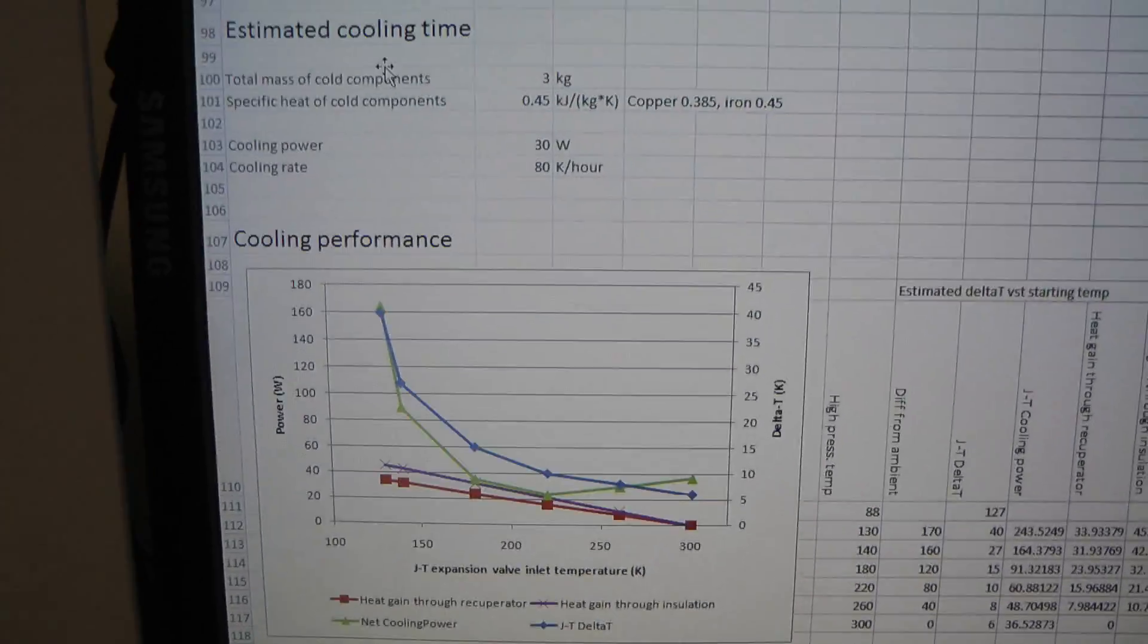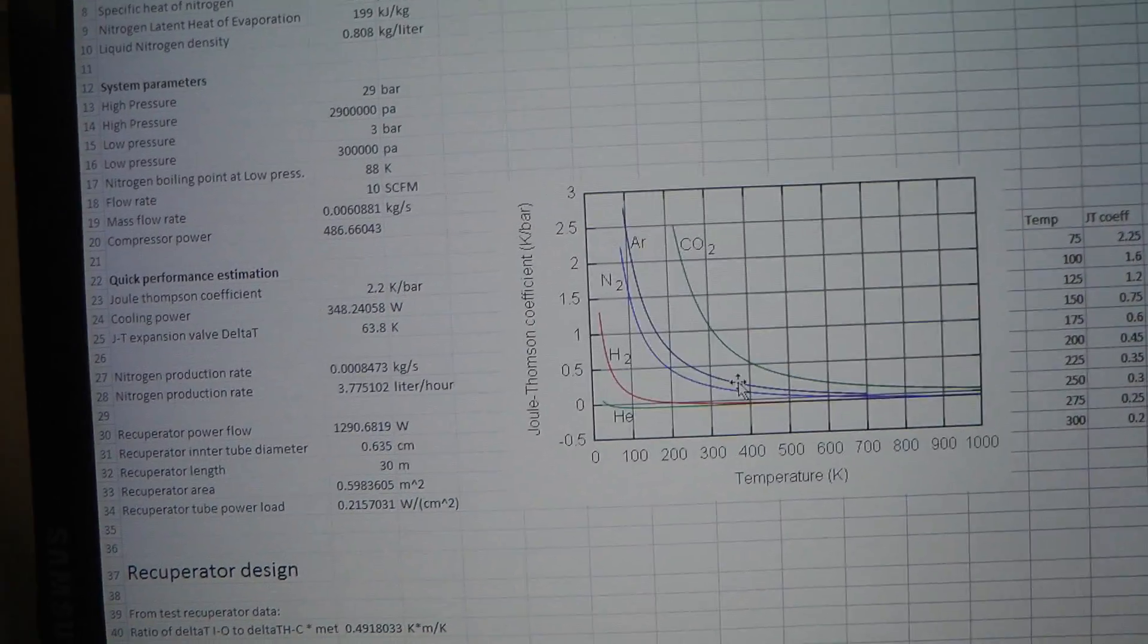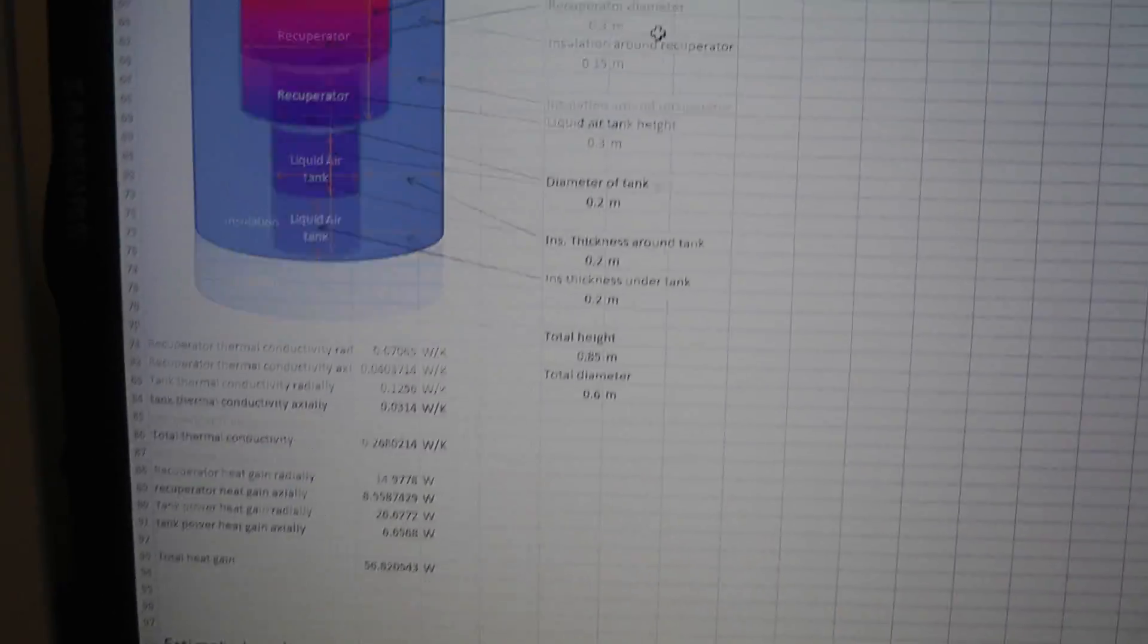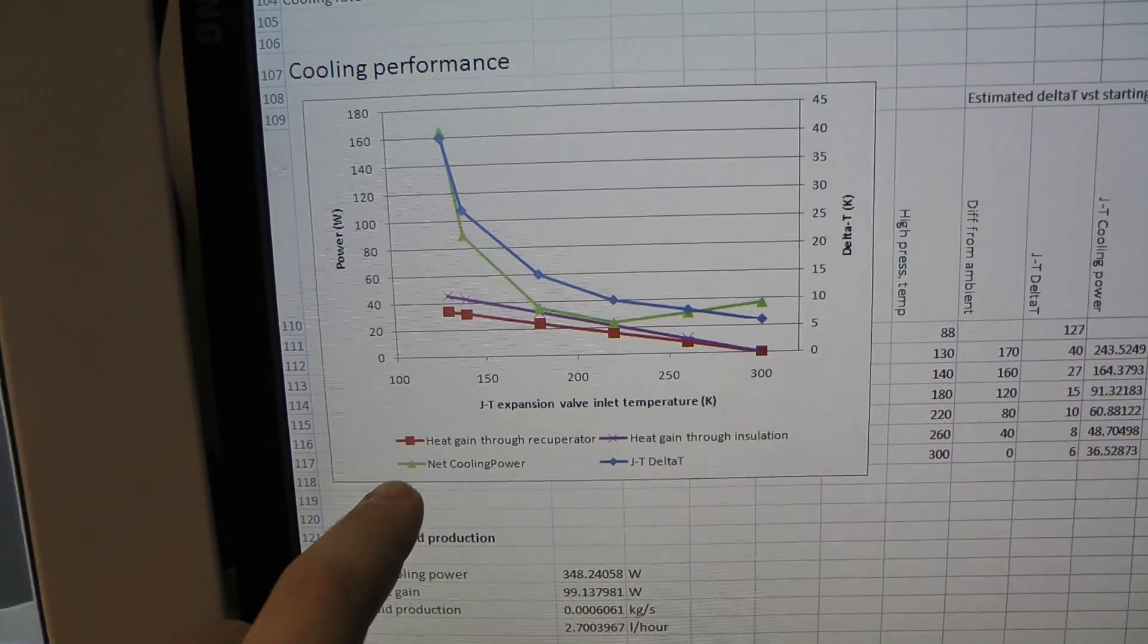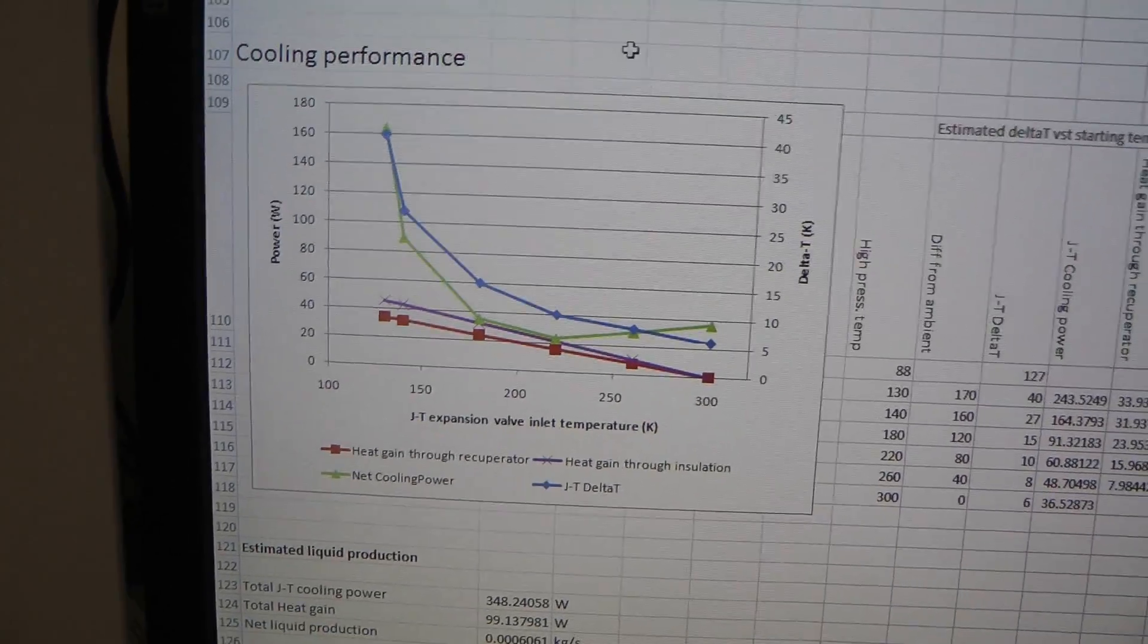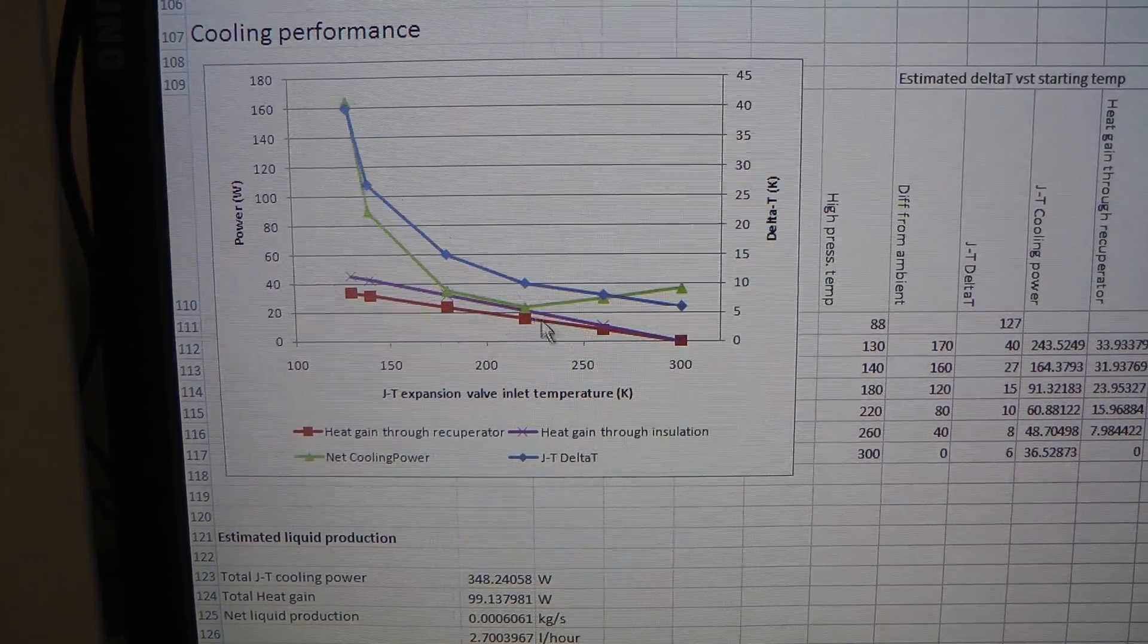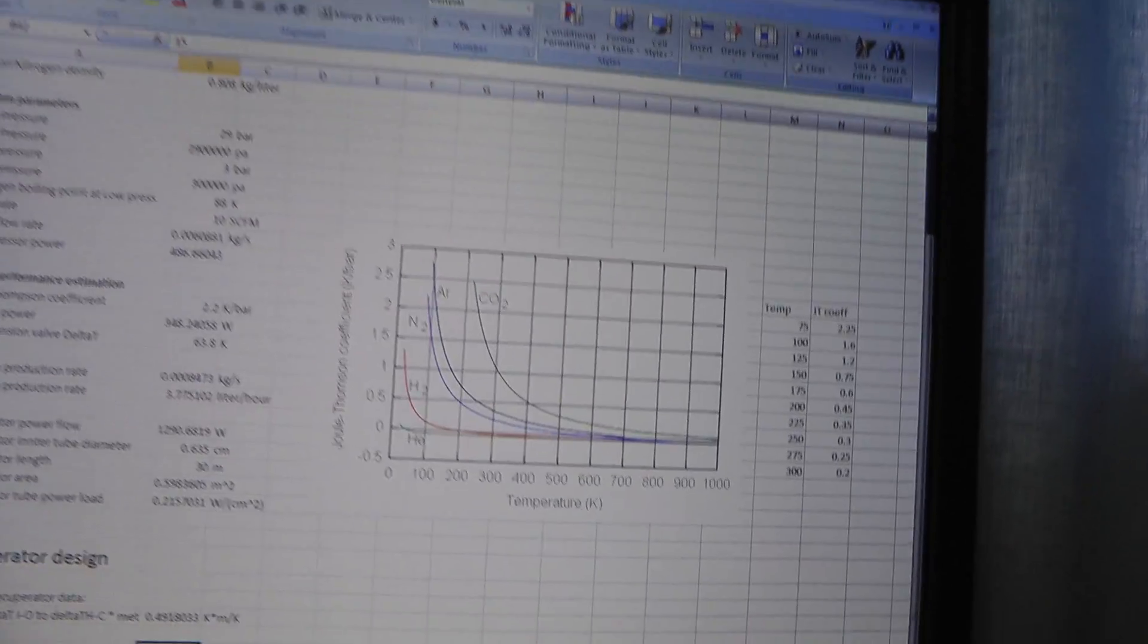And here's the cooling performance, estimated at various temperatures. Because if you look at the Joule-Thompson graph, you've got much better cooling at low temperatures than at higher temperatures. So assuming you can get down to low temperatures is fine, but getting through this sort of mid-portion can be difficult. On this graph, the green line is the net cooling power. The red line is the heat gain through the recuperator, heat loss through the recuperator. The purple line is the heat going through the insulation. And once you calculate that all out, you've got this sort of dip in the middle, where you have to get through it, where it's sort of halfway down to temperature, but you lose some cooling power, because you're losing heat, but you're not gaining extra cooling from the really low temperatures yet.